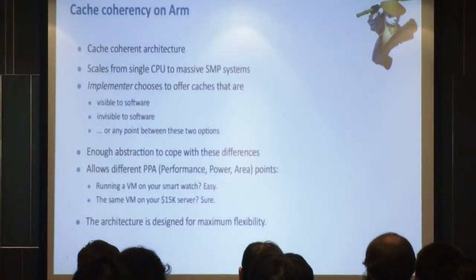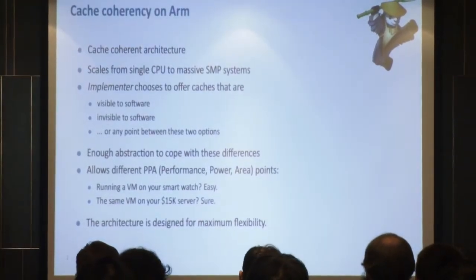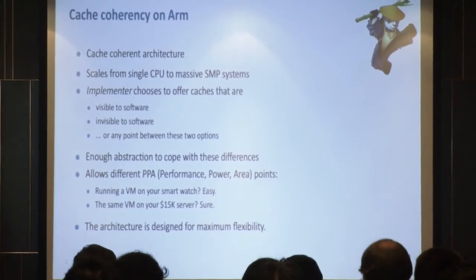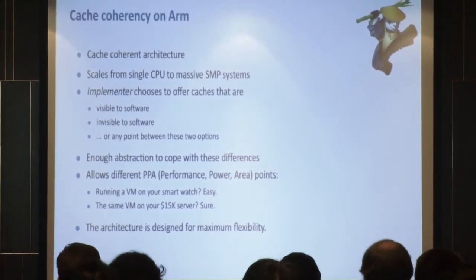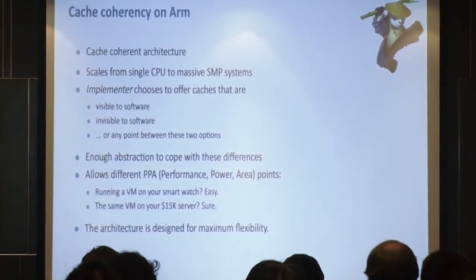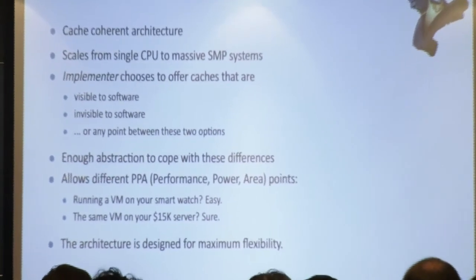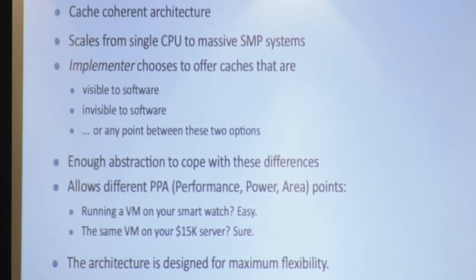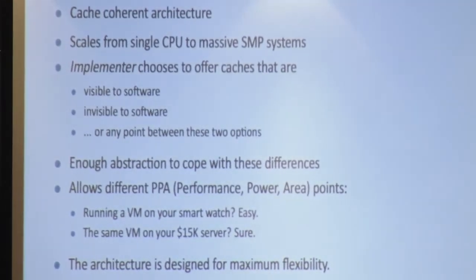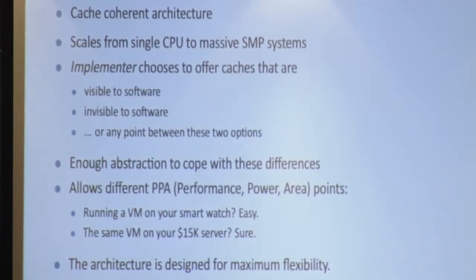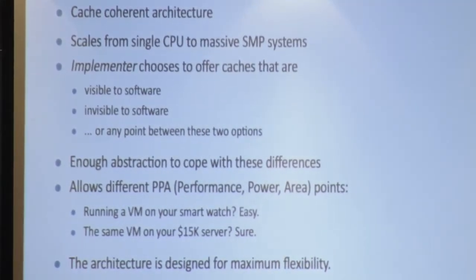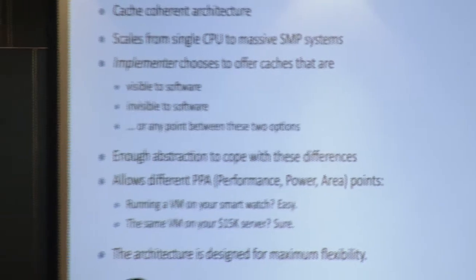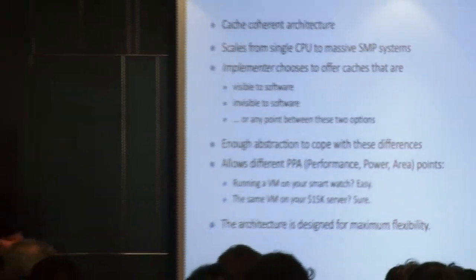This allows the implementer to decide the performance and power characteristics of the cache on that CPU. For instance, we can run a VM on a smartwatch, or we can run the same VM on a 15k server. That's how the architecture has been designed for maximum flexibility.